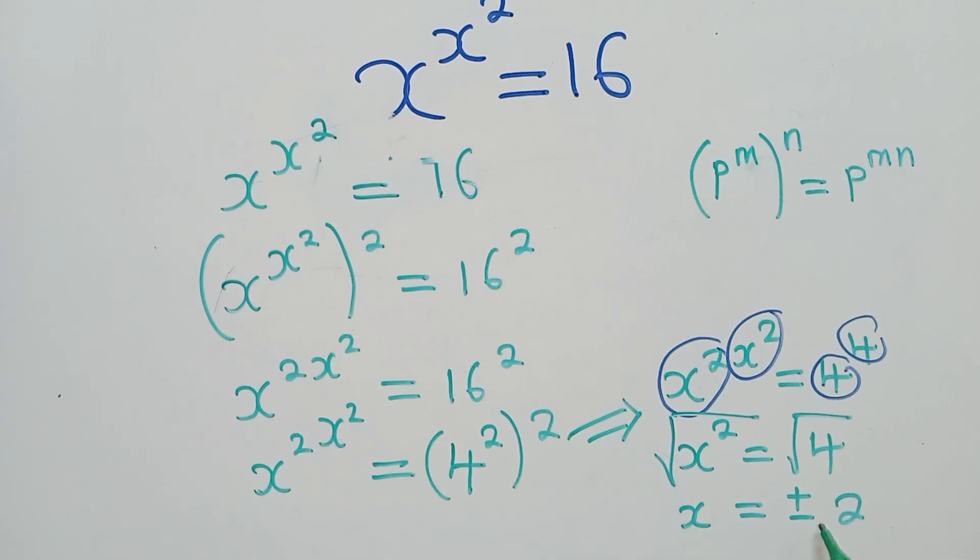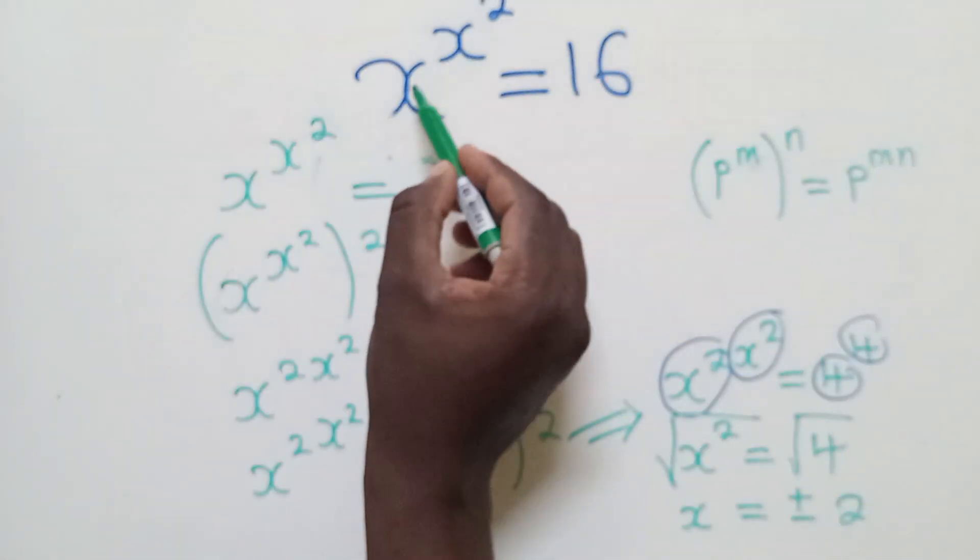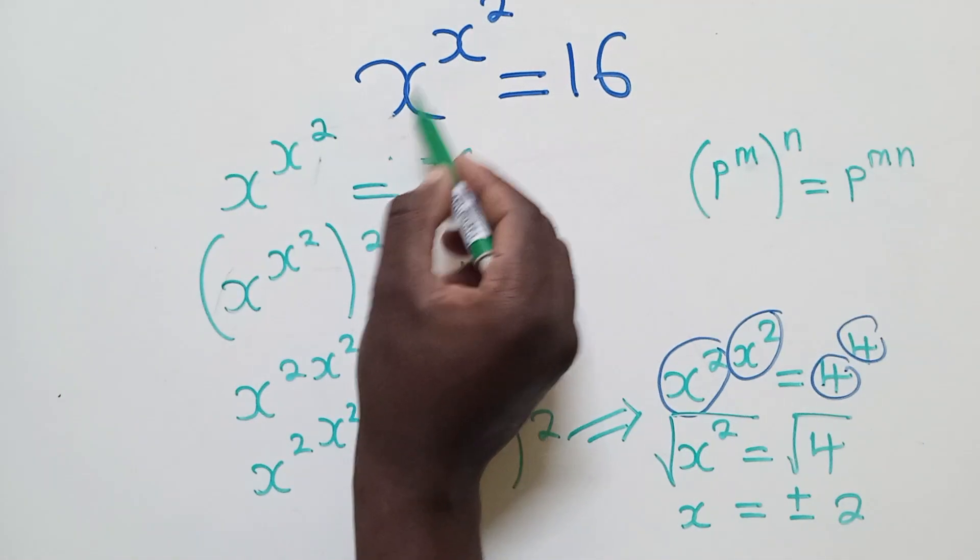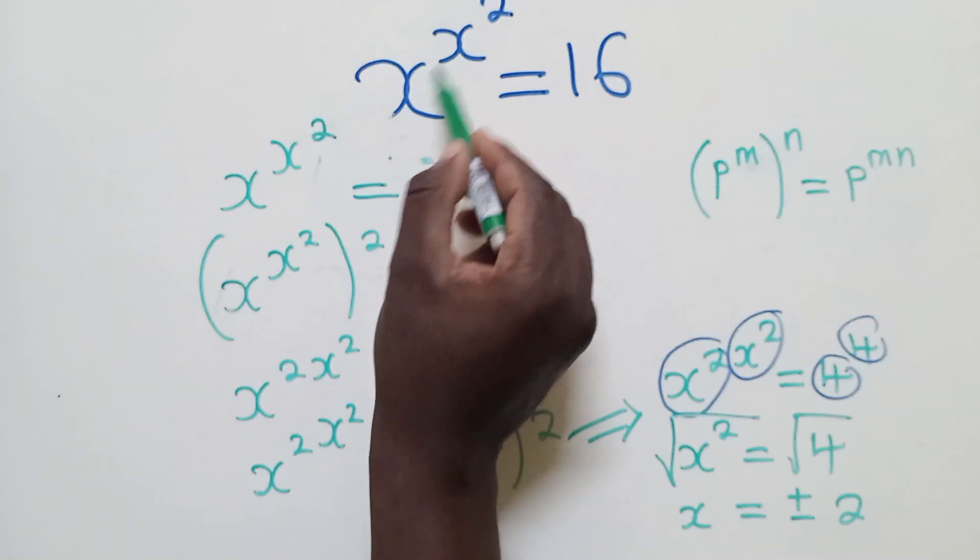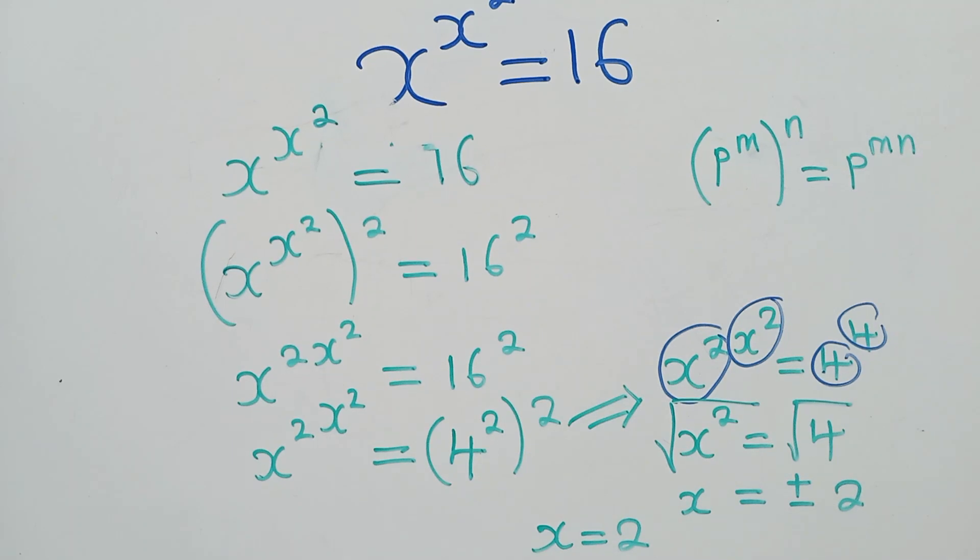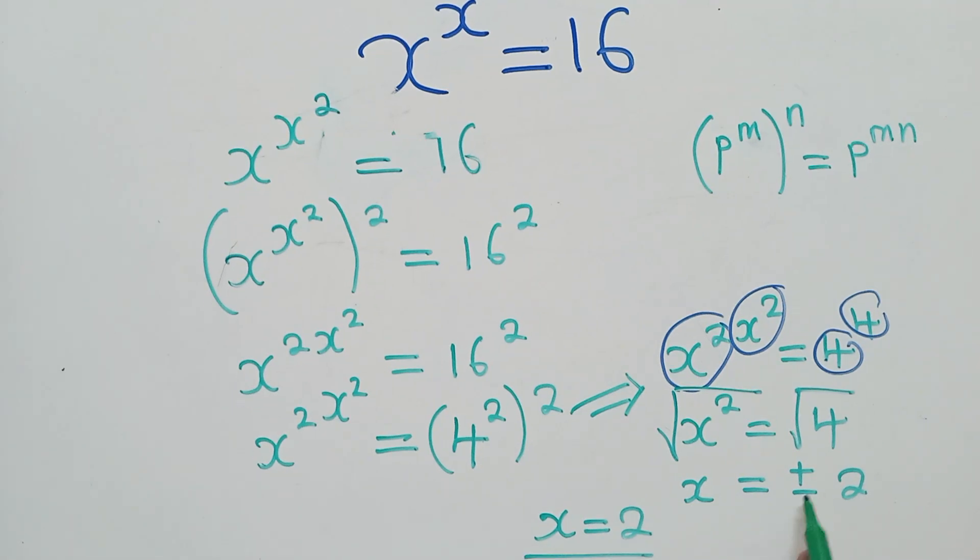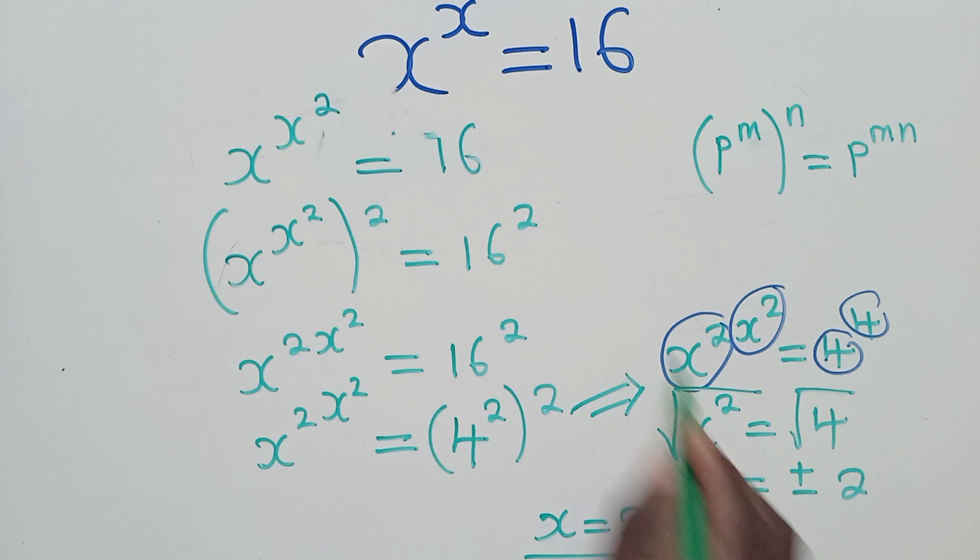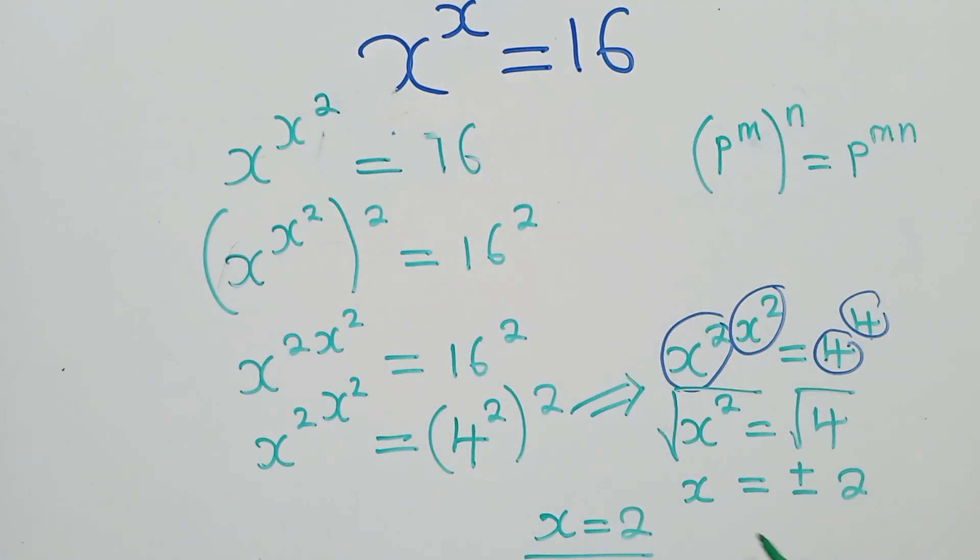We can test by plugging it in here. We put a 2 here and a 2 here, so it will be 2^(2^2), which gives us 16. So x = 2 is a solution. You can also try with negative 2. If it gives you 16, you can say it's equal to negative 2. In this case, our x value will just be equal to 2.